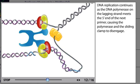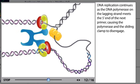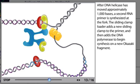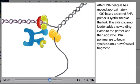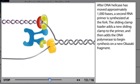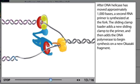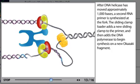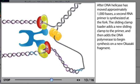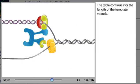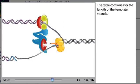DNA replication continues as the DNA polymerase on the lagging strand meets the 5 prime end of the next primer, causing the polymerase and the sliding clamp to disengage. After DNA helicase has moved approximately 1,000 bases, a second RNA primer is synthesized at the fork. The sliding clamp loader adds a new sliding clamp to the primer and then adds the DNA polymerase to begin synthesis on a new Okazaki fragment. The cycle continues for the length of the template strands.